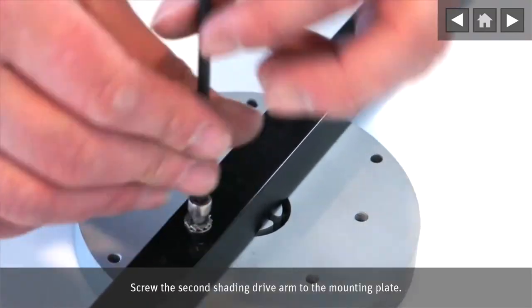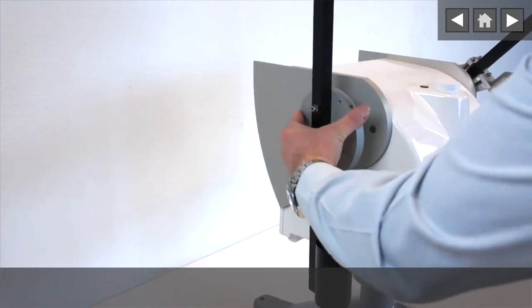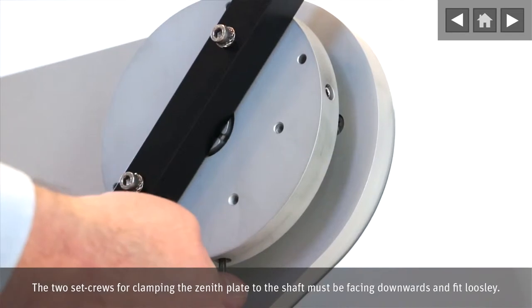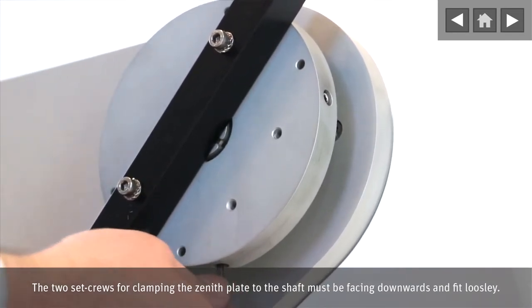Screw the second shading drive arm to the mounting plate. The two set screws for clamping the zenith plate to the shaft must be facing downwards and fit loosely.